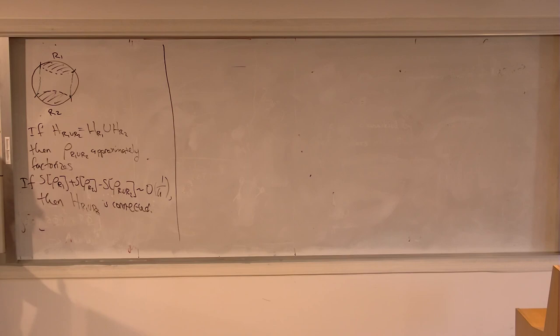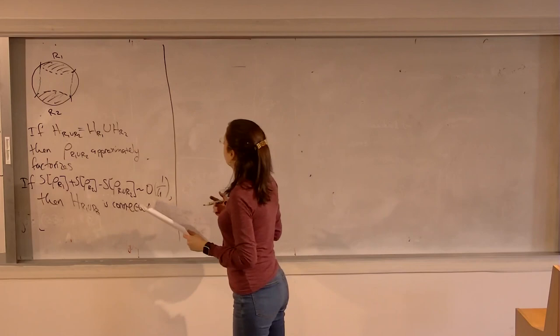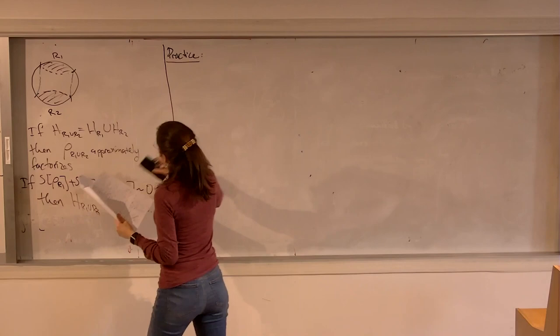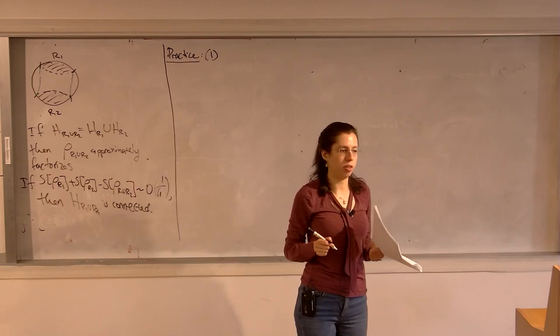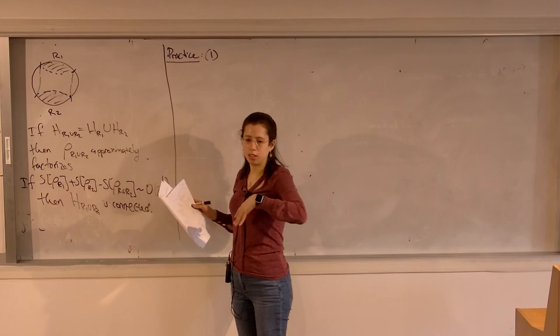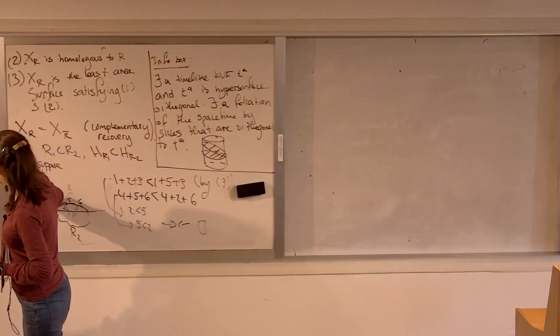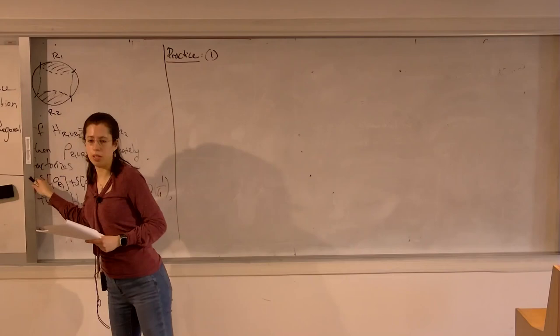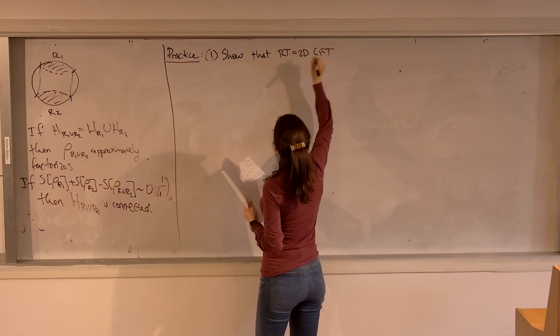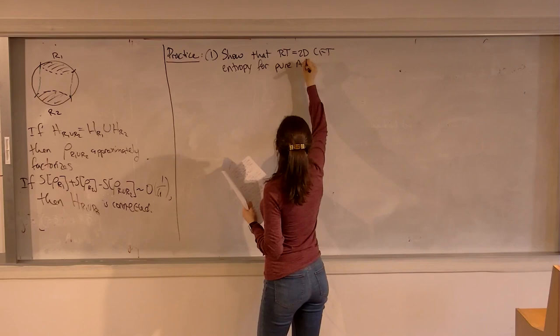Had a couple of exercises for those students who would like to try them. A very simple thing is to literally do this calculation for AdS_3/CFT_2 and find that it reproduces the von Neumann entropy of an interval. You essentially fix R, solve the extremality equation, find it's basically a geodesic, compute its length, and plug it in. Show that RT equals the 2D CFT entropy for AdS3/CFT2.